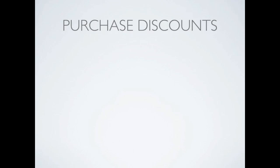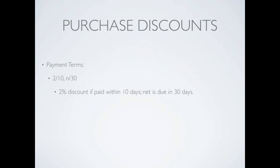Now let's look at purchase discounts. A purchase discount is a deduction from the invoice price that's granted to encourage early payment of an amount due. We can have several types of terms. For example, 2/10, n/30 — in accounting terminology we say this as '2 10 net 30.' This means we get a 2% discount if it's paid within 10 days. If it's not paid within 10 days, the net is due in 30 days. That's what 2/10 net 30 means.